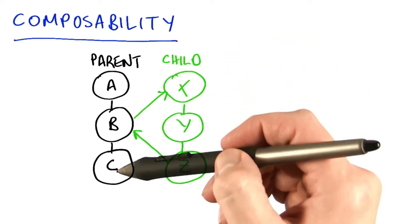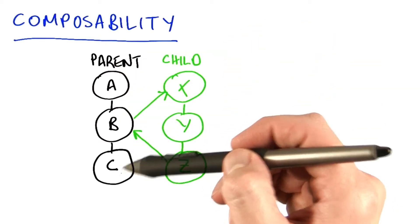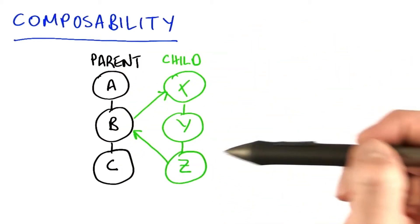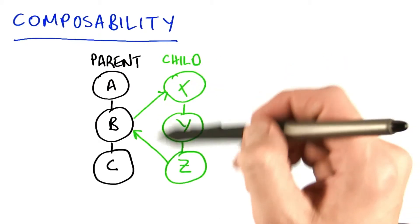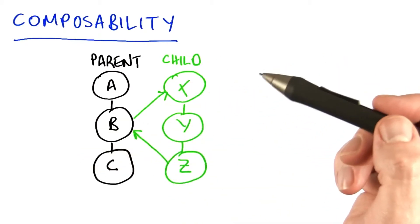So A, B, and C still execute in sequence as expected, and B follows the rules of composability such that whatever B does, it has no effect on C's ability to execute.